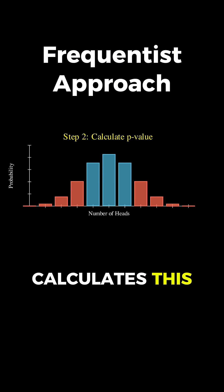When the frequentist calculates this using the binomial distribution, he finds that if you flipped a fair coin 10 times, you'd expect to see 7 or more heads about 17% of the time. That's his p-value, 0.17.